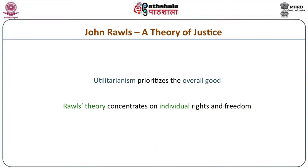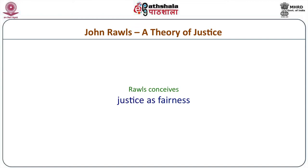Utilitarianism concentrates on the good of the overall political community, and in that respect, it prioritizes the overall good to any particular individual good. In John Rawls's own words, utilitarianism has a patent disregard for the individual in favor of the community. So what John Rawls presents through his theory of justice is a concentration on individual rights and freedoms. He completely overcomes the utilitarian political philosophy that was dominant in the late 1960s and early 1970s. Rawls conceives of justice in very simple terms as fairness.